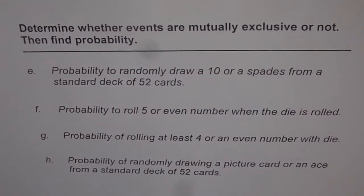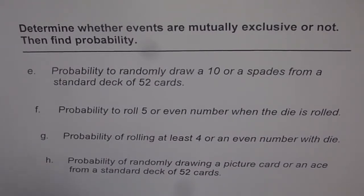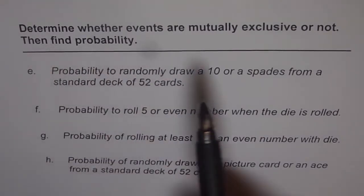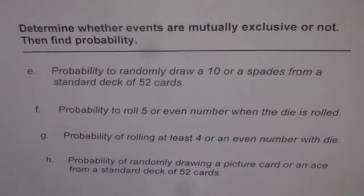Let us now try to understand what are mutually exclusive and which events are not mutually exclusive. The question here is: determine whether events are mutually exclusive or not, then find probability. These four options are as follows.